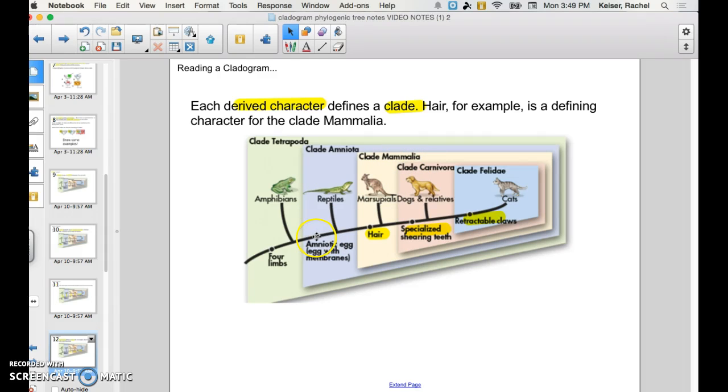For instance, this one down here, amniotic egg or egg with membranes. All species beyond that have that trait. And so that defines this clade, amniota. That's always one that I always mispronounce.